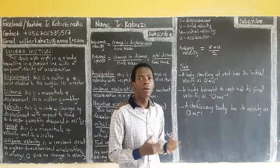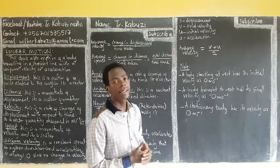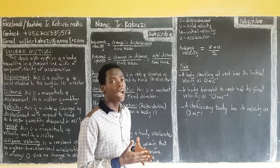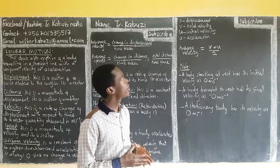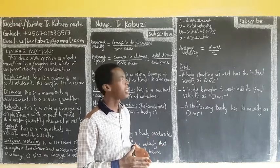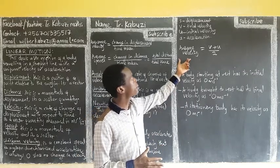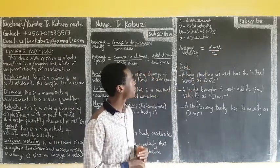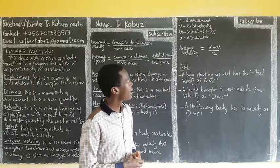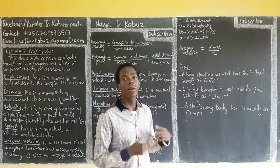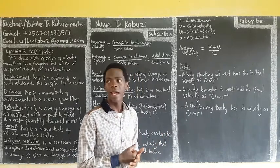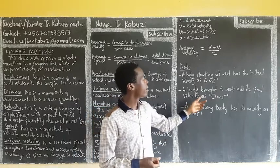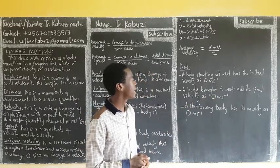In mechanics, S is used as displacement, V is used as final velocity, U is initial velocity, and A stands for acceleration. Average speed is given by the final velocity plus initial velocity divided by 2. Note that a body starting from rest has its initial velocity U equal to zero, and a body brought to rest has its final velocity V equal to zero.